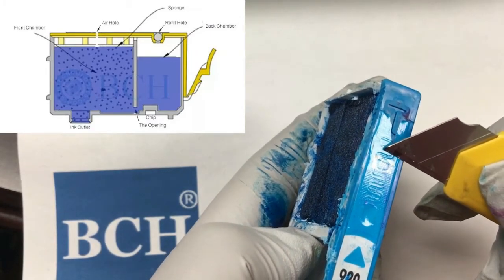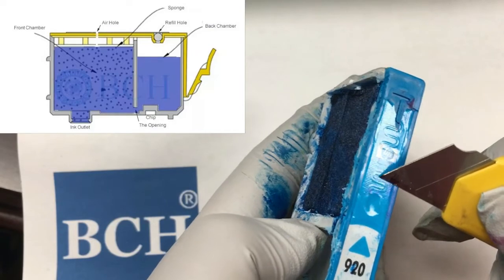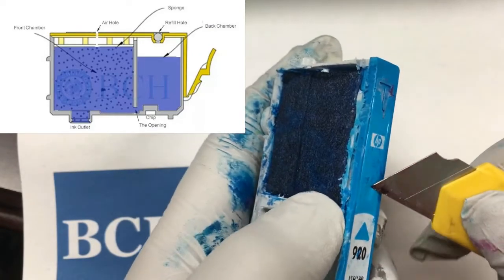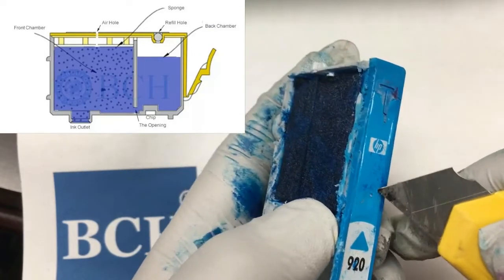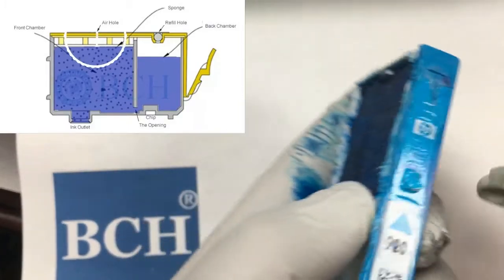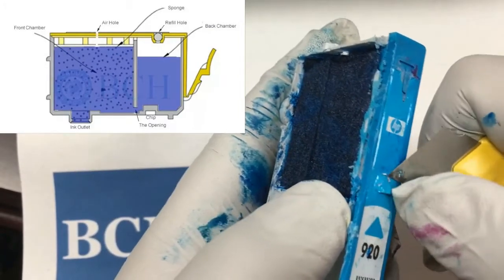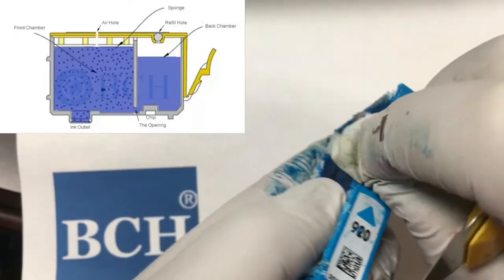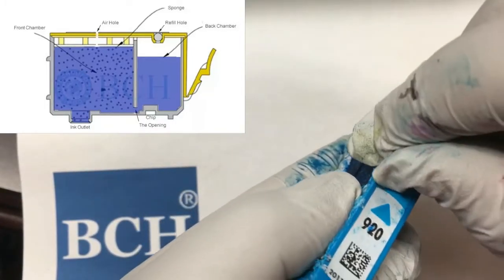On the top, there's a T-shaped air intake which leads to a long air channel. The air channel connects to an air hole. When a cartridge is in use, the cartridge sucks air into it from the air hole.